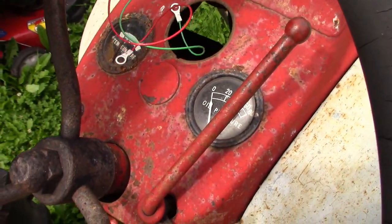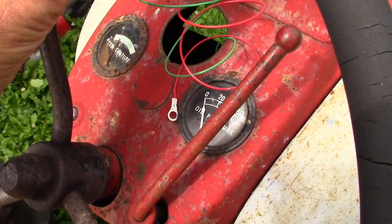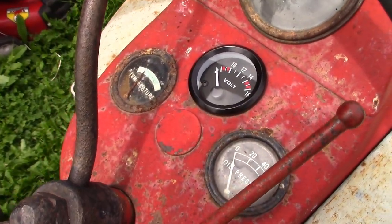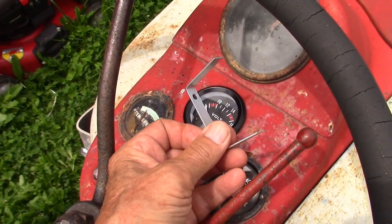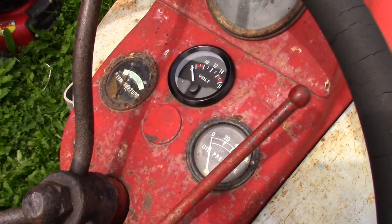Now we place the voltmeter in its spot and this is a standard two inch meter. The meter will be held in from behind with this clip that will hold it in its location.